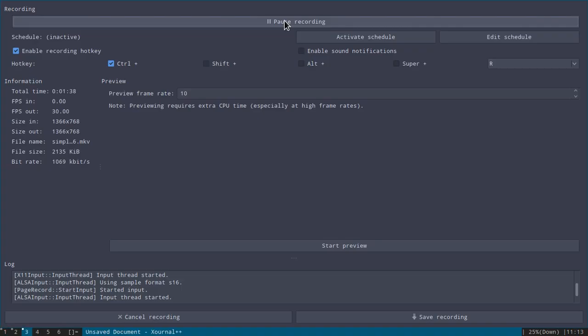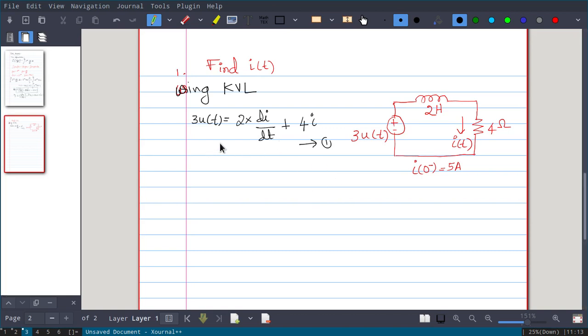Now if we take Laplace transform on both sides in this equation, taking Laplace transform on both sides of this equation, so this becomes we know that u(t) is nothing but 1/s equal to 2 di/dt. What is the Laplace transform of a time differentiation? That is 2u outside and inside it is s into i(s) minus i(0-). You just see that formula, di/dt is s into Laplace transform of this i(s) minus i(0-), so this we derived in the last video.